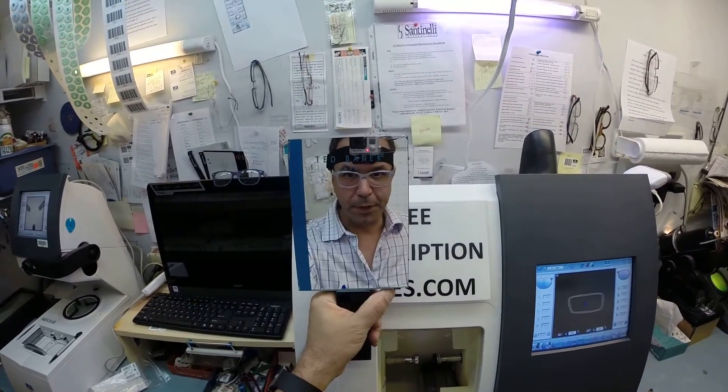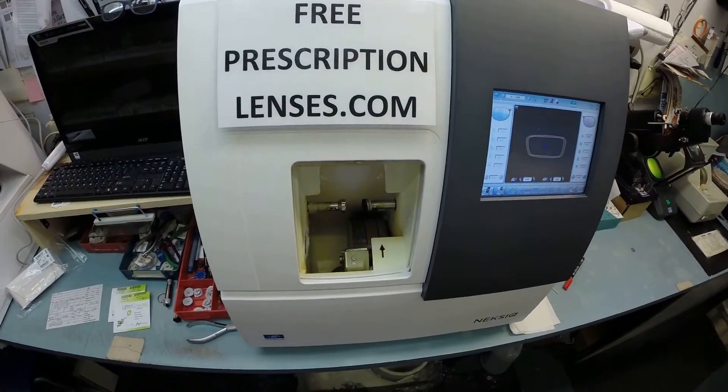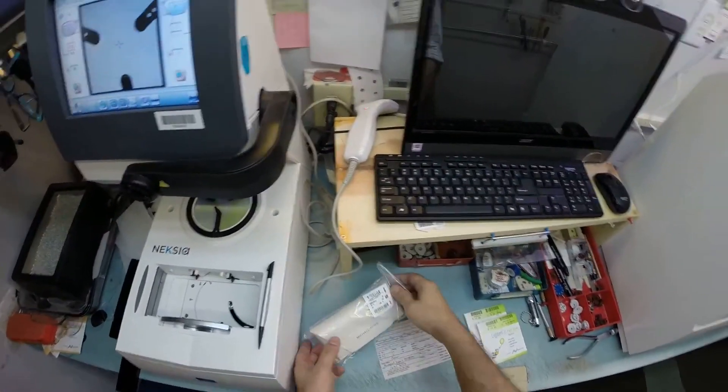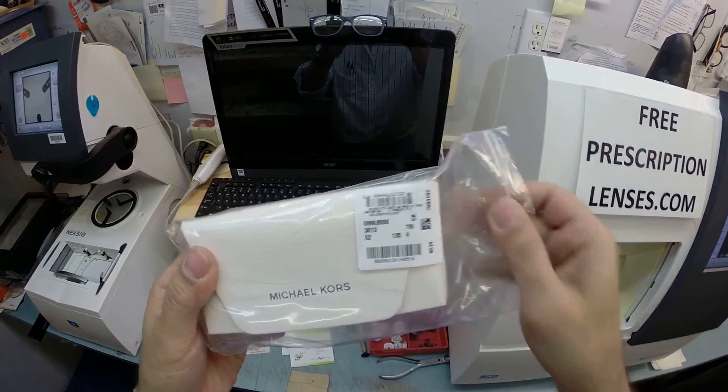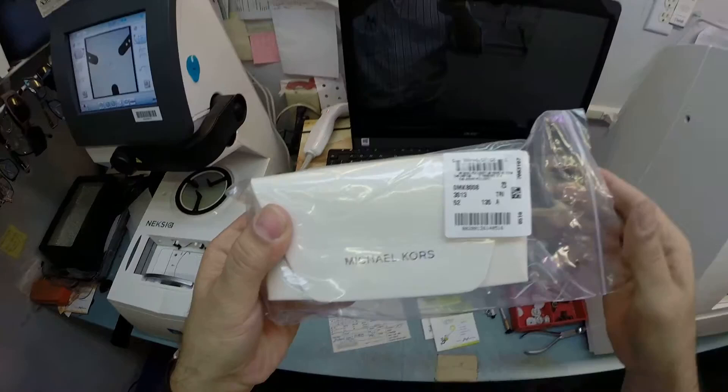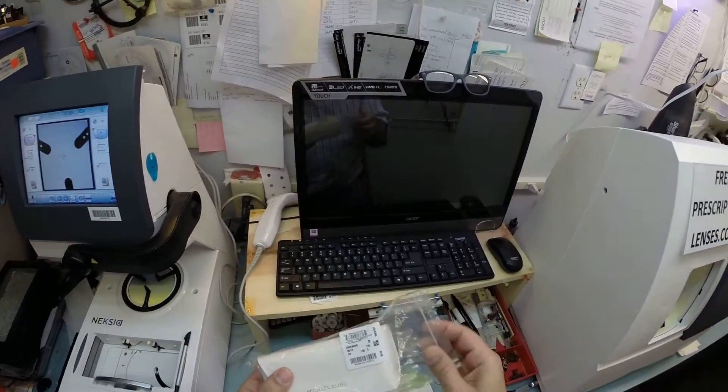Hey Mary in Greensboro, North Carolina. It's Matthew with FreePrescriptionLenses.com and with the help of my GoPro camera, I'm going to show you how I cut prescription lenses for your brand new Michael Kors 8008. The color is 3013 and the 52 eye size.